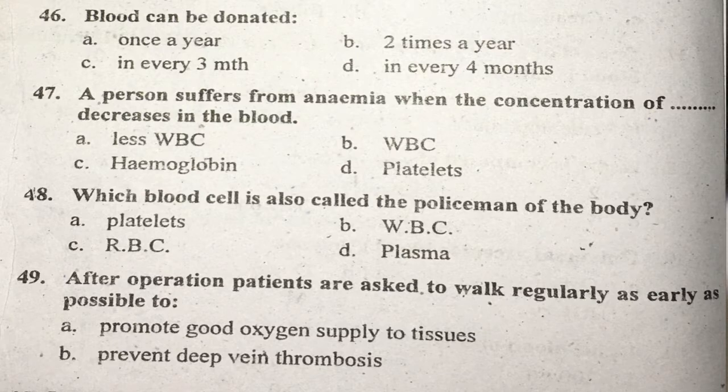Question forty-six: Blood can be donated every how many months? Blood can be donated every three to four months. The reason is that RBC life span is about 120 days, so every three to four months is appropriate. Right answer is D.